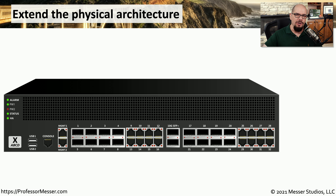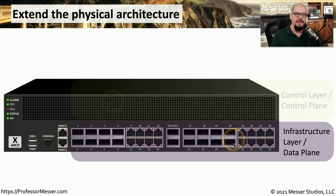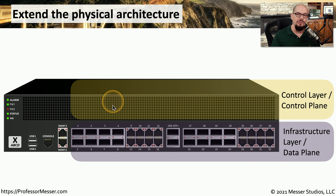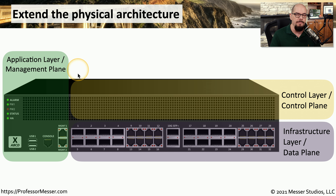Let's overlay this SDN architecture on a traditional physical switch. Instead of a physical switch, we break out the individual interfaces as the data plane, or infrastructure layer, where all forwarding occurs — frames and packets are moved around thanks to the data plane. We then manage routing tables, switching tables, or NAT tables through the control layer. The traditional management section of the switch is pulled into the application layer, or management plane.